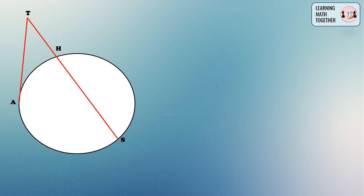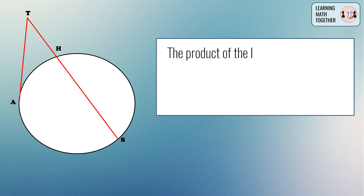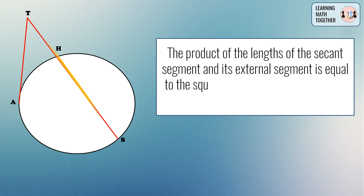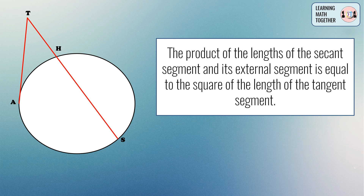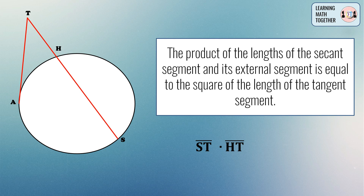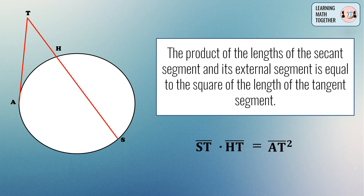To determine the length of the segments formed by the intersecting secant and tangent, we need to use this theorem: the product of the lengths of the secant segment and its external segment is equal to the square of the length of the tangent segment. That means you take secant segment ST, multiply it by its external segment HT, and equate that to the square of tangent segment AT.